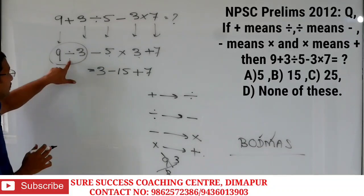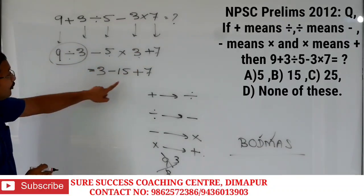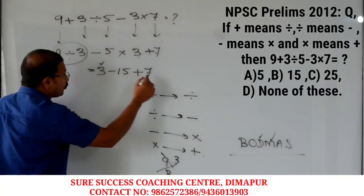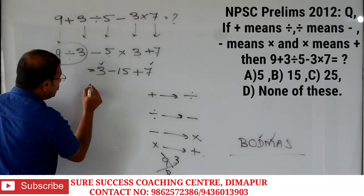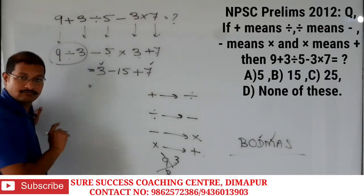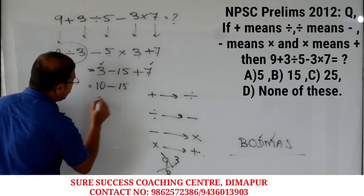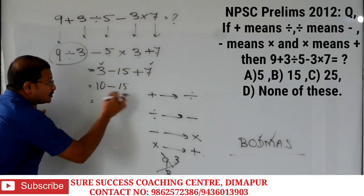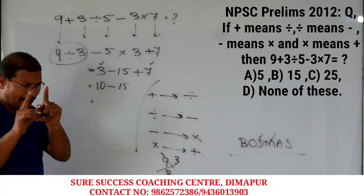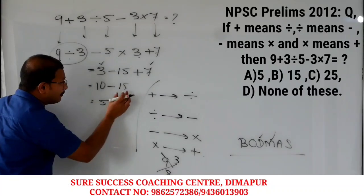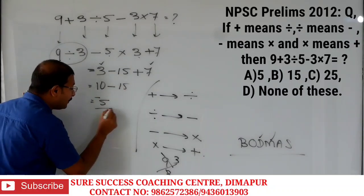Division complete, multiplication complete. Now we do addition: 3 plus 7 equals 10. That means we have 10 minus 15. Now, since plus and minus are left, we do subtraction: 15 minus 10 is 5. But the bigger number 15 has a minus sign, so the answer is minus 5.